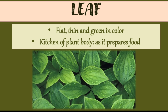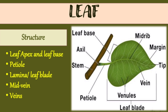The leaf is flat, thin, and green in color. It is called the kitchen of the plant body because plants prepare food by themselves. The leaf has a leaf apex at the tip and a leaf base at the bottom. The stalk of the leaf is called the petiole.